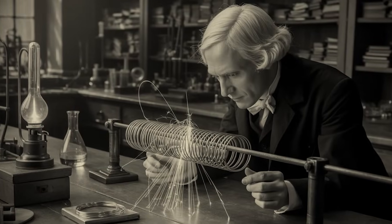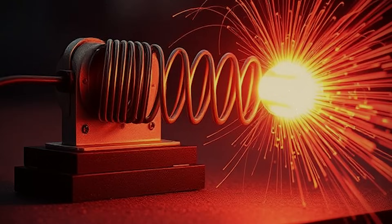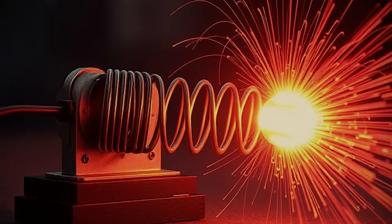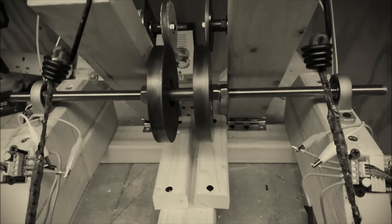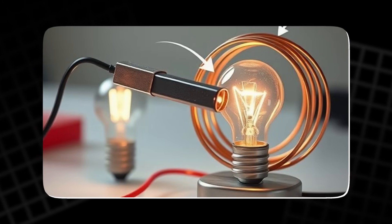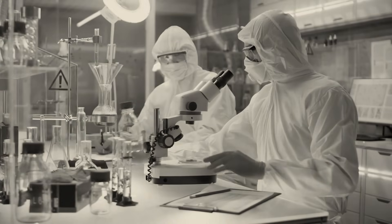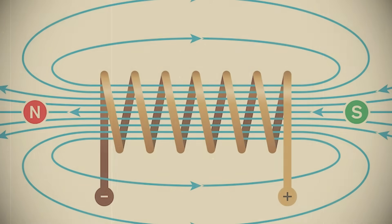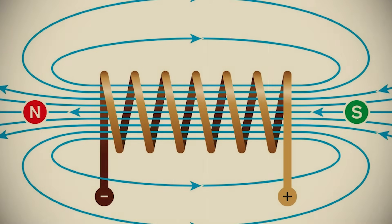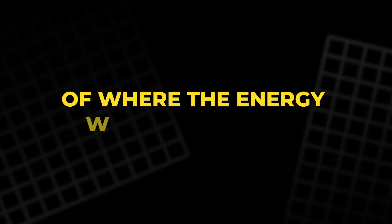In his later experiments, Faraday proposed the idea of lines of force, invisible lines that could connect a magnet to a coil, transmitting energy from one to the other. This was the first conception of the magnetic field, which would later be developed and refined by other scientists, including James Clerk Maxwell. Faraday's idea of lines of force was a groundbreaking insight into the nature of electromagnetic fields, but it did little to answer the fundamental question of where the energy was coming from.